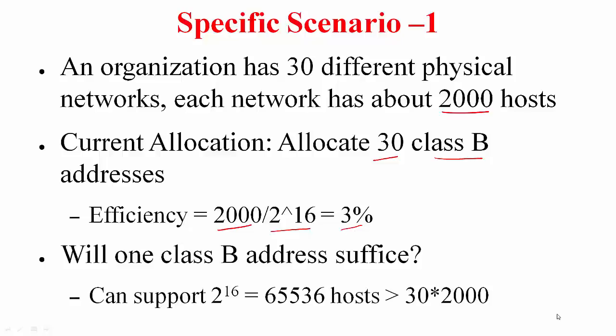Well, the calculation says yes because you have 2 to the power of 16 hosts you can support as part of class B, that is 65,536 hosts, and the number of hosts that are part of this organization is 30 into 2000, that is 60,000 which is less than 65,536. But how do we allocate this class B address to these 30 different physical networks? The answer is not difficult. You have seen the solution before.